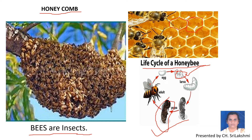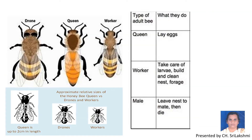There are three types of bees which live in the honeycomb. First is the queen bee, next is the drone, and the next is the worker. The queen bee is up to two centimeters in length, whereas drones and workers are smaller in size than the queen bee.